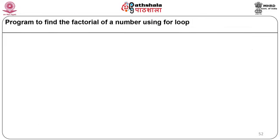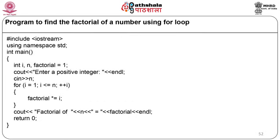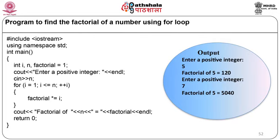A factorial program uses a for loop. Variables n and factorial (initialized to 1) are declared. The user enters a positive integer n. The loop: for (i = 1; i <= n; i++) { factorial *= i; }. After the loop, the factorial is displayed. Entering 5 produces 'factorial of 5 is 120'.